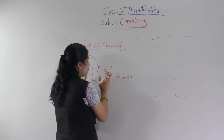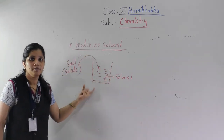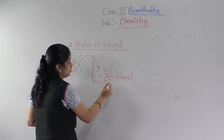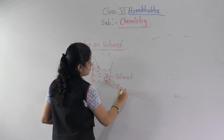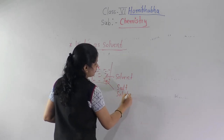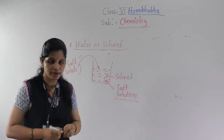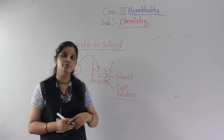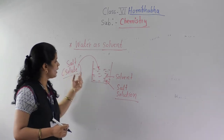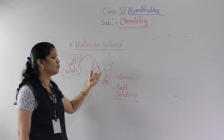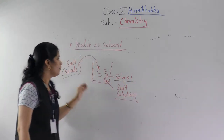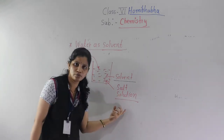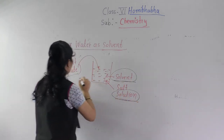First, only water was there, so it is a solvent. But then when we add the salt in the water, the salt particles mix into the water, and we get a salt solution. So three points are important: solute — the substance we are going to add; solvent — water, in which we add it; and when these two substances are totally mixed together, we get the salt solution.